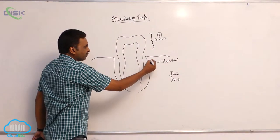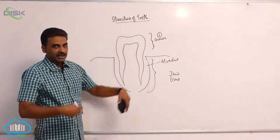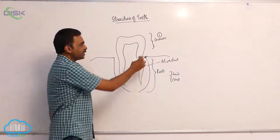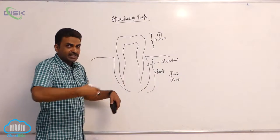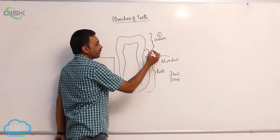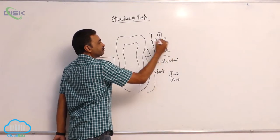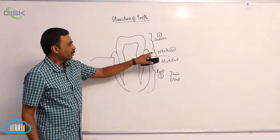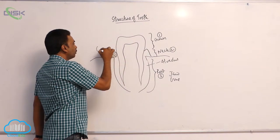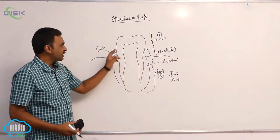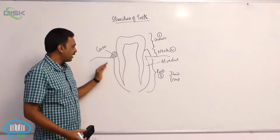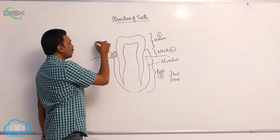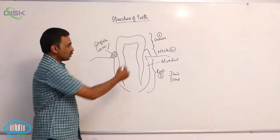The part of the teeth which is embedded inside and not visible externally is called the root. In between the exposed part and the part embedded inside the jawbone, you can find an area called the neck. The neck is where we can find the gum — a fleshy area covering the tooth at the base, very close to the jawbone. The gum is also called gingiva.